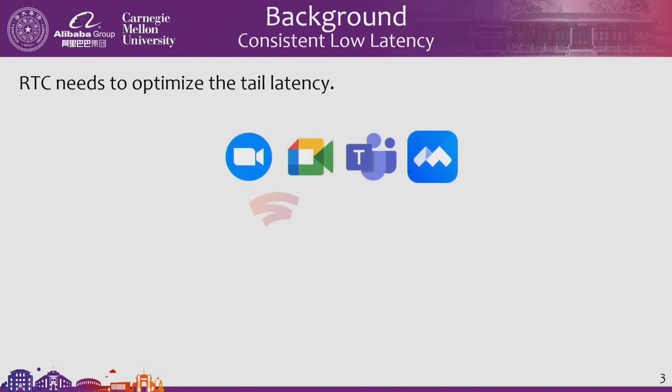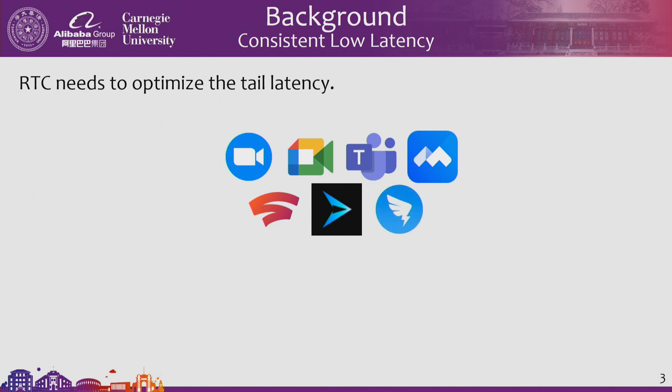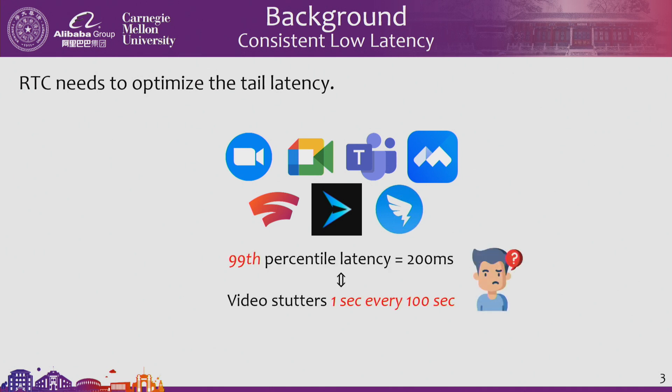An outstanding feature of RTC is that it requires optimizing the tail latency, or what we call here consistent low latency. This is very important for cloud gaming, video conferencing, and similar RTC applications. For example, in a video call session, if the 99th percentile latency is 200 milliseconds — above which users start to experience stutter or interaction delays — this means video stutter will happen once every two minutes, which is really bad for user experience. So we are motivated to optimize the extreme tail of latency.